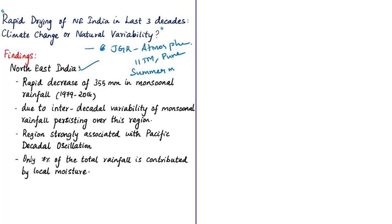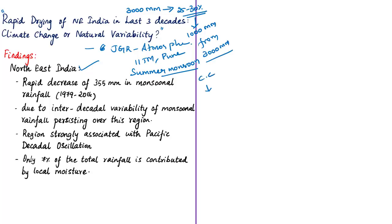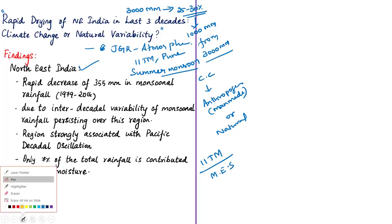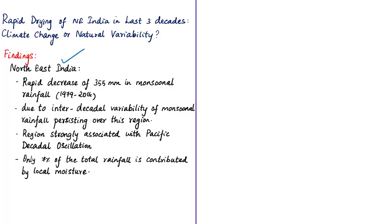Some places receiving 3000 mm of rain during the monsoon season have seen a drop of about 25 to 30 percent, approximately 1000 mm. Researchers set out to find whether this decrease is due to climate change or anthropogenic activities, or due to natural reasons. The Indian Institute of Tropical Meteorology is an autonomous institute of the Ministry of Earth Sciences. The research found that Northeast India experienced a rapid decrease of 355 mm in monsoonal rainfall during the last 36 years from 1979 to 2014.